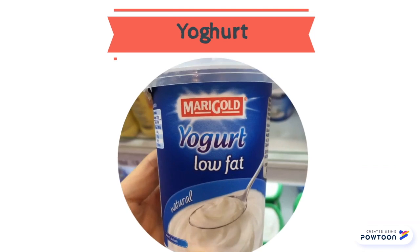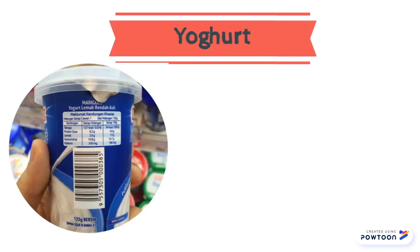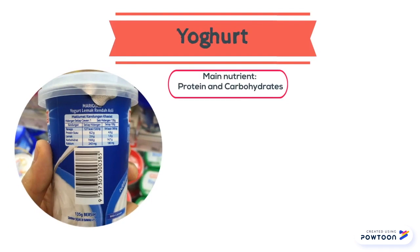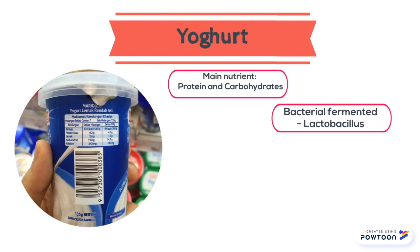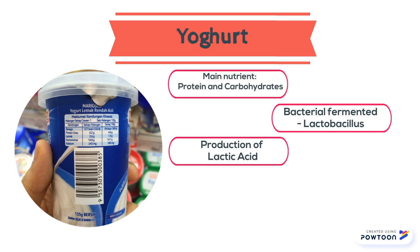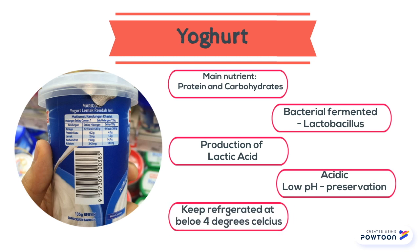The yogurt that we are using is this low fat natural plain yogurt. The main nutrients in yogurt are carbohydrates and protein. Yogurt has undergone bacterial fermentation by Lactobacillus. Fermentation produces lactic acid which gives a sour flavor. The acidic environment of yogurt serves as a preservation method, and it is also to be stored at refrigeration at below 4 degrees Celsius.